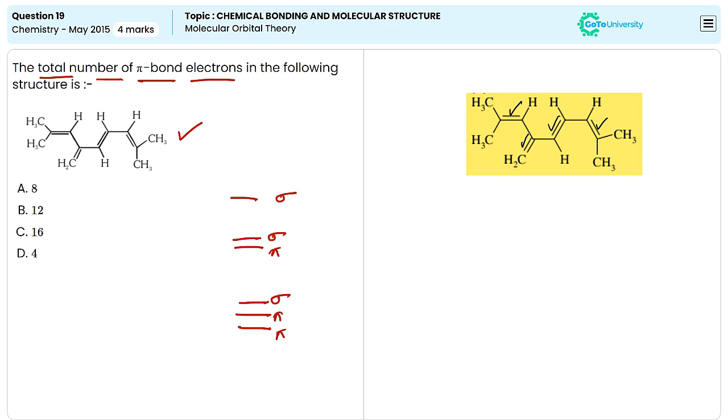One bond is formed by sharing of two electrons. So four pi bonds are formed by the sharing of a total of eight electrons. From these options, the correct answer is option A. This molecule contains eight pi bond electrons.